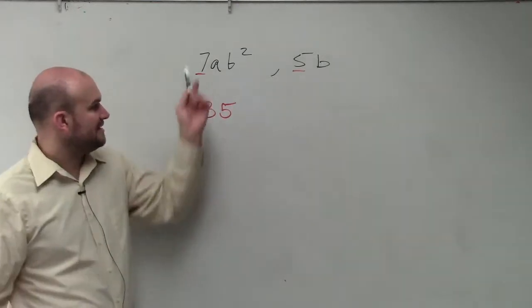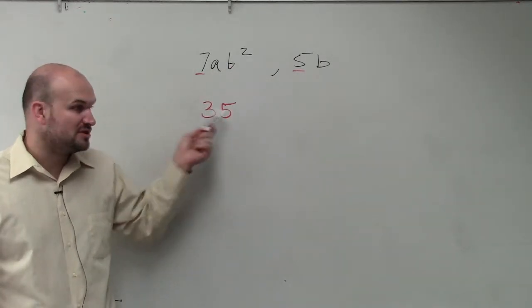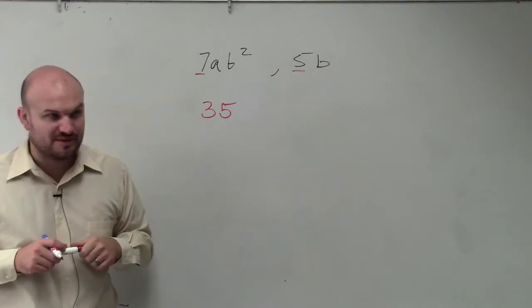35, right? Because 7 goes into 35 and 5 divides into 35. That is the smallest number that both 7 and 5 divide into. Everybody agrees with me? OK.